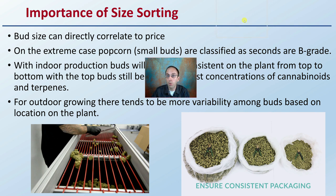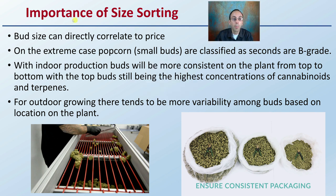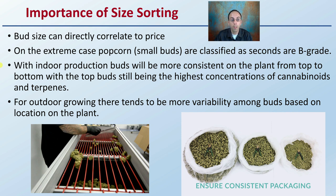Bud size can directly correlate to price. On the extreme case, the popcorn or small buds are classified as seconds or B grade. With indoor production, buds will be more consistent on the plant from top to bottom, with the top buds still having the highest concentrations of cannabinoids and terpenes — very similar to those on the lower end, but definitely higher due to greater light exposure. There are other studies on this channel that go into more detail on that.